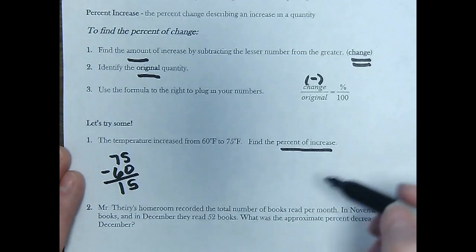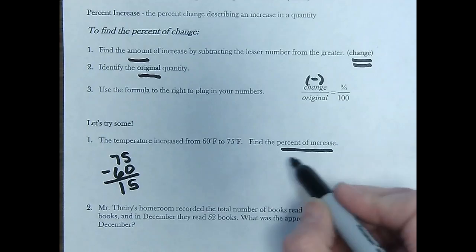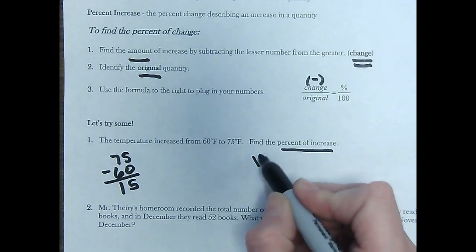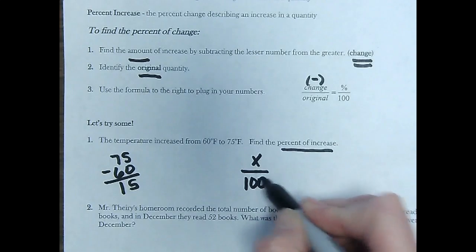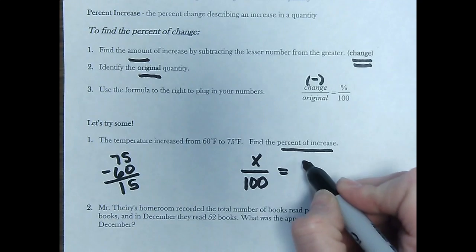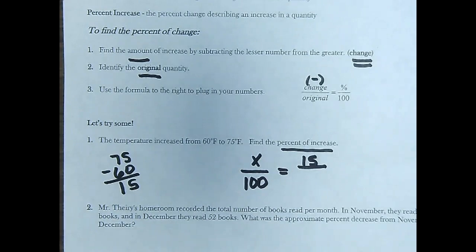Now I go into my proportion. So the percent over 100. Since I'm trying to find the percent, I put my variable there. It's x over 100 equals the amount of change, which was 15, over the original.